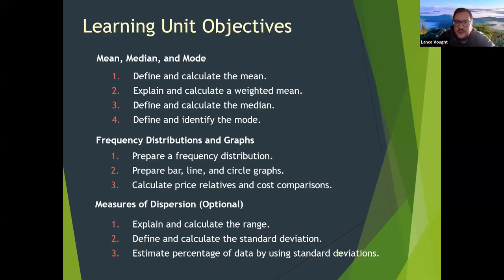So mean, median, and mode are measures of central location, and they have different pros and cons. We're not going to get into that in this class, but most people would lean on mean, also known as average, versus median or mode.